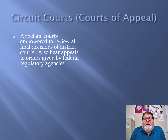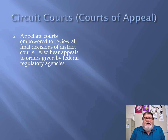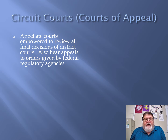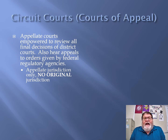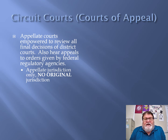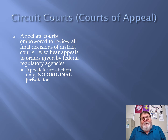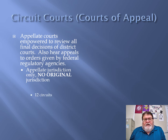Circuit courts are appellate courts — courts of appeal — empowered to review all final decisions of district courts. They also hear appeals of orders given by regulatory agencies of the federal government. They have only appellate jurisdiction — absolutely no original jurisdiction. District courts have original jurisdiction only; appellate courts have appellate jurisdiction only. That's very important to know.